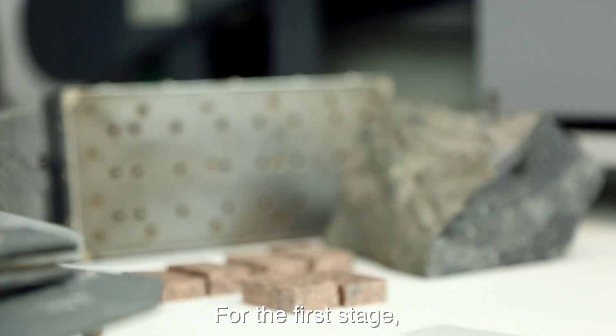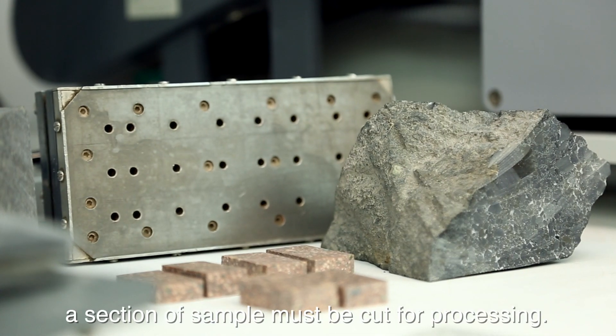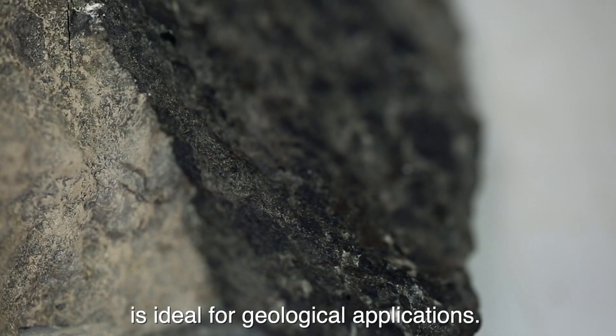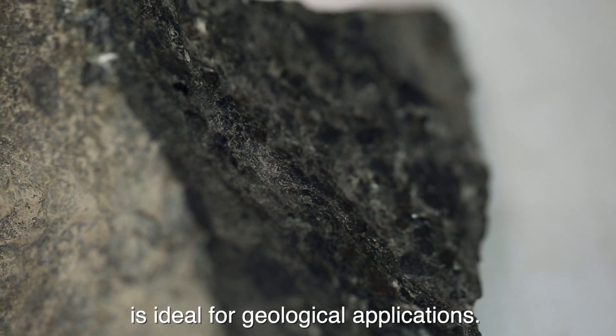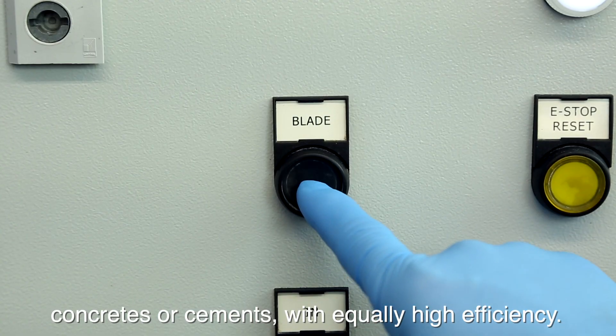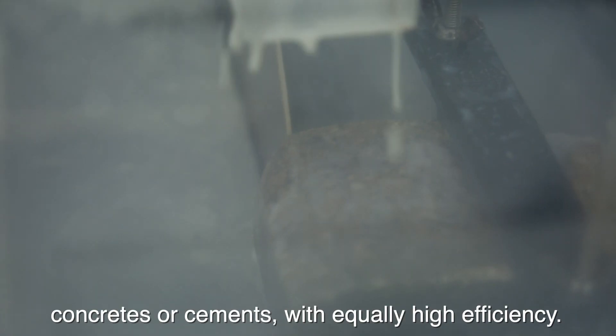For the first stage, a section of sample must be cut for processing. The GTS-1 thin section cutoff and trim saw is ideal for geological applications, allowing users to cut hard or soft rocks, concretes or cements with equally high efficiency.